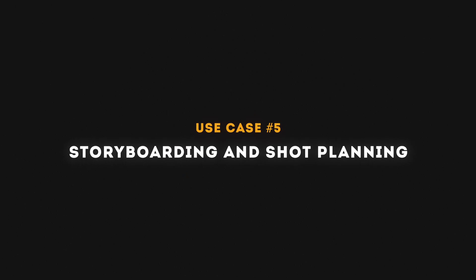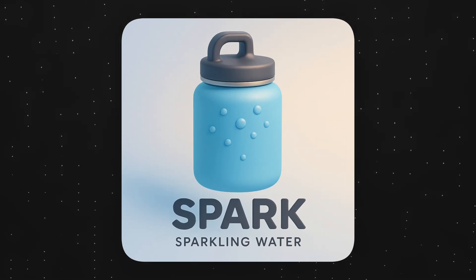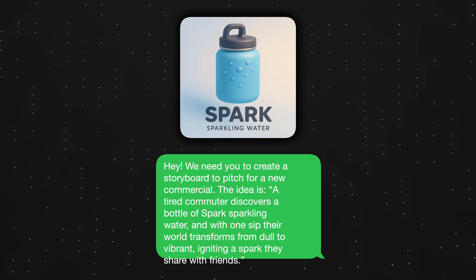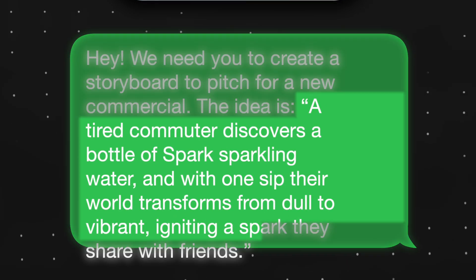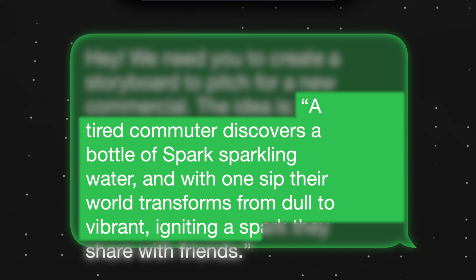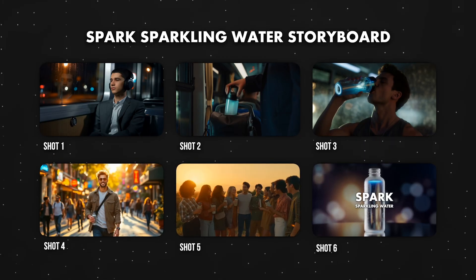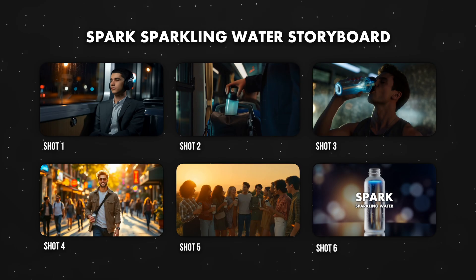The fifth and final practical way to use Generative AI video is number five: storyboarding and shot planning. I've created a fake brand for this example — Spark, a sparkling water company. They have an idea for a video: a tired commuter discovers a bottle of Spark, and with one sip their world transforms from dull to vibrant, igniting a spark they share with friends. I created a storyboard using still frames from the clips I generated, and using those clips I was able to create a very rough idea of what the video could end up looking like.